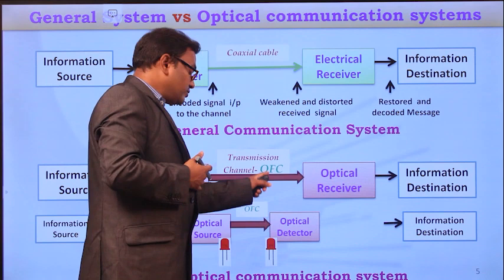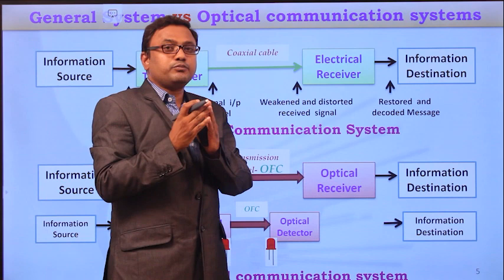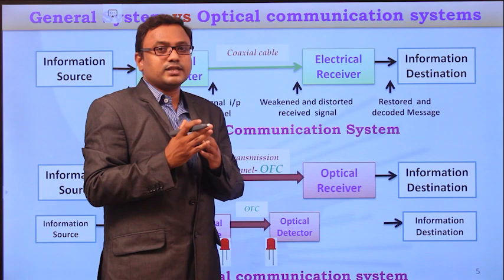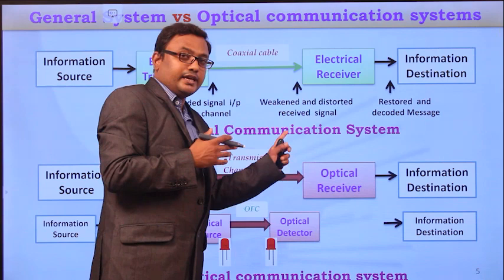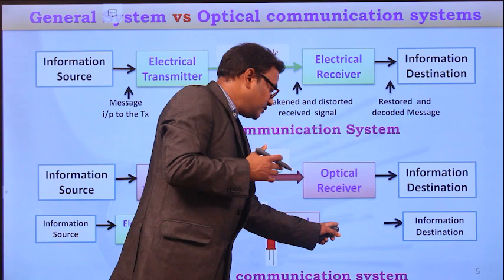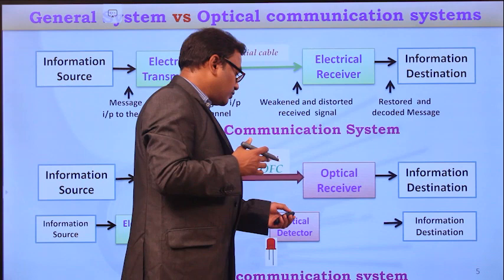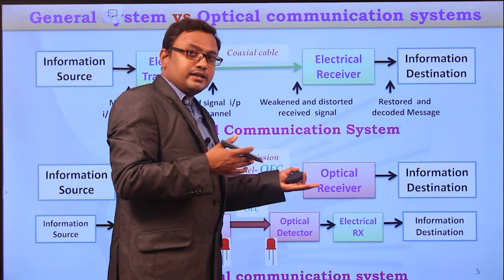Since optical fiber cables are used for longer-distance communications, the receiver may receive weak signals. Therefore, the receiver must be able to detect weak signals, and high-sensitivity receivers must be used. The sensitivity of the optical detector must be very high so it can detect weak signals coming from the channel. The optical detector converts the received light information into an electrical signal, and that electrical signal is then processed by means of preamplification, amplification, and then decoding.